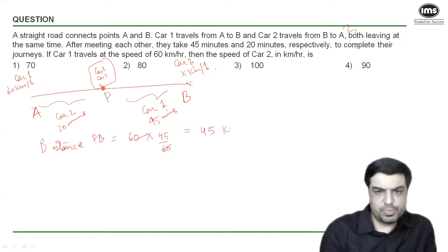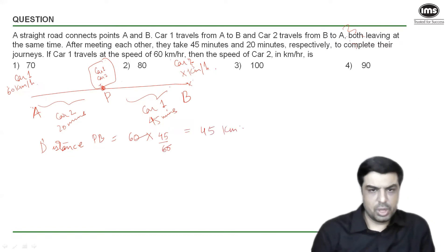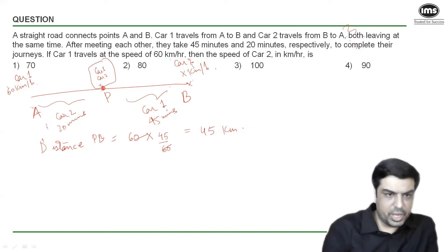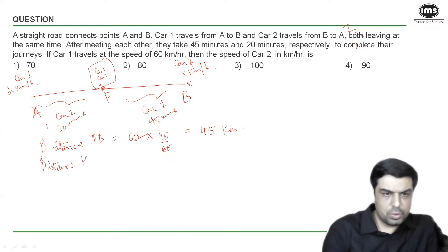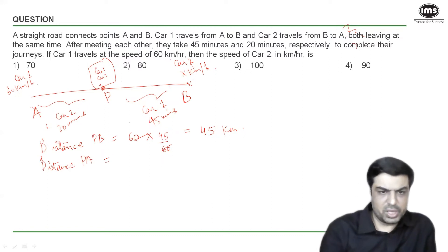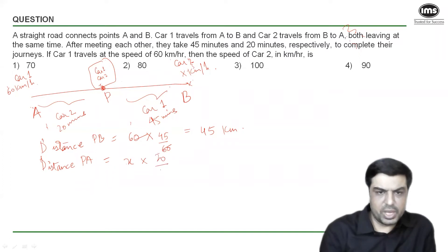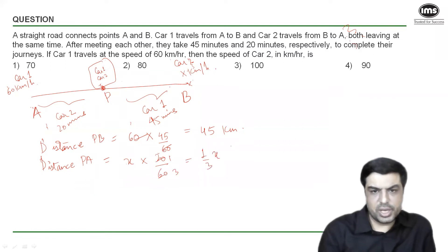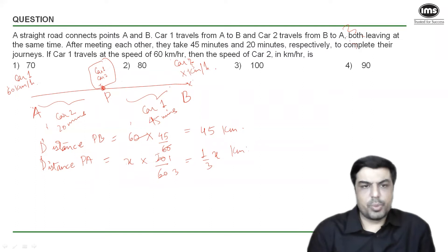Now for distance PA, which was covered by car two at speed x km/h in 20 minutes. Converting to hours: 20/60 = 1/3. Using distance = speed × time, distance PA = x × (1/3) = x/3 kilometers.